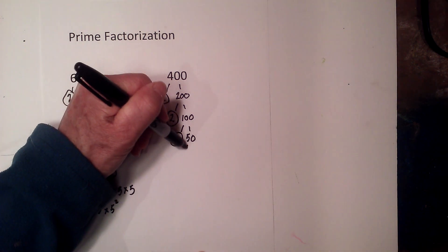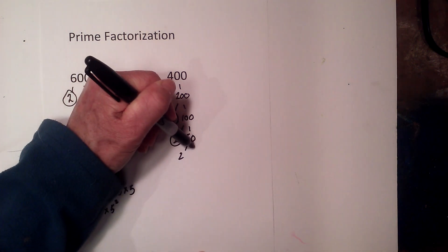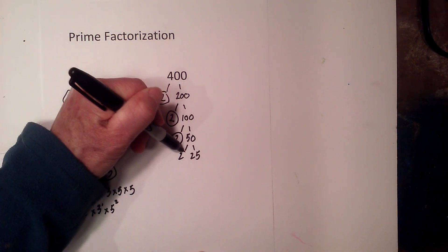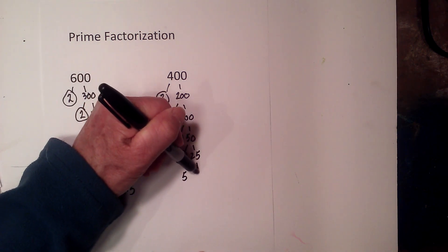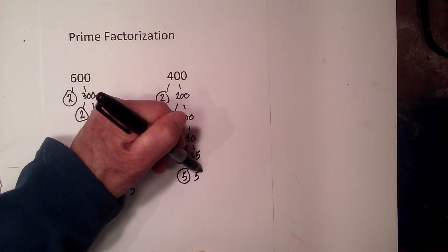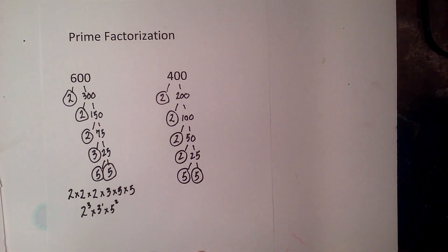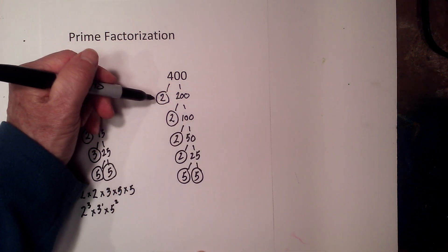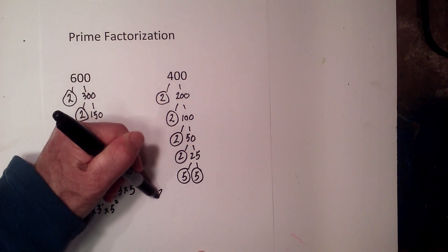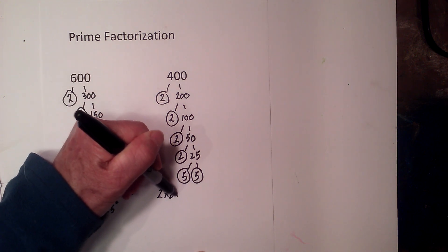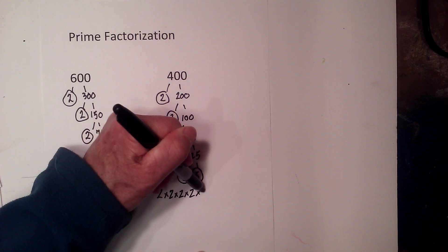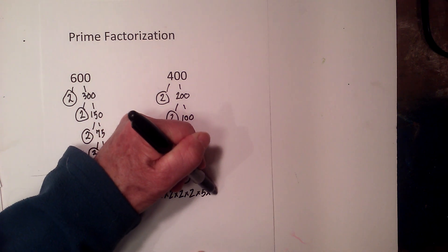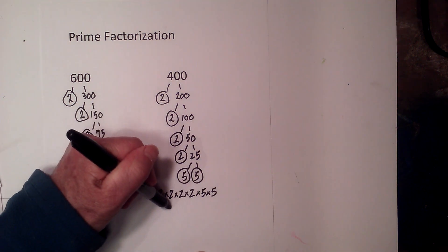Now 2 times 25 equals 50 — circle the 2. And finally 5 times 5 equals 25 — circle both of these because they are prime. Now we're down to just prime numbers, so the prime factorization of 400 is 2 times 2 times 2 times 2 times 5 times 5.